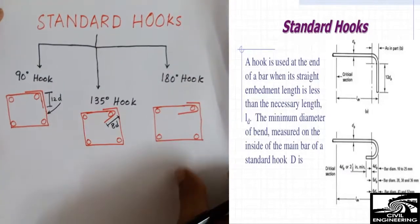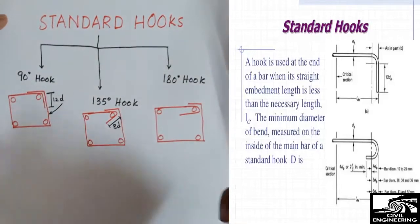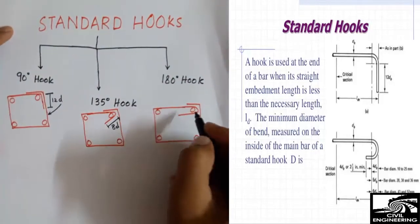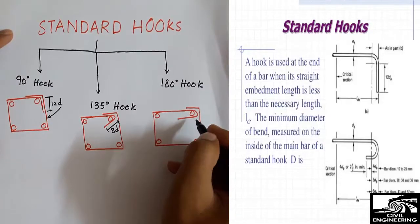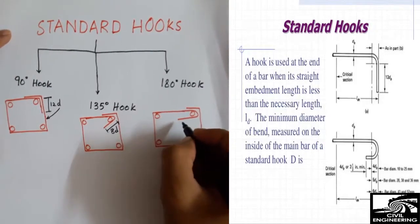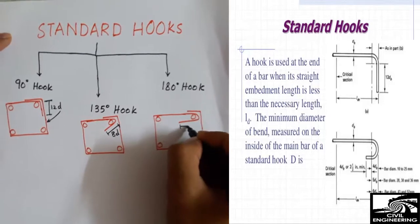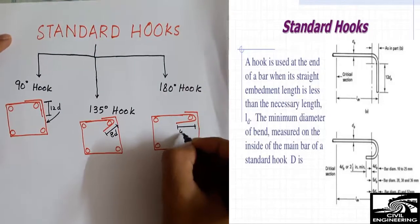There are too many experiments on these hooks. When you are providing 180 degree hook with your stirrups, the length of the hook should be 4d or minimum of 2.5 inches. It should not be less than that.